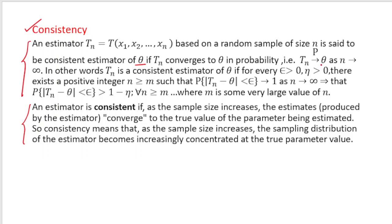It means that Tn tends to theta in probability as n tends to infinity. In other words, Tn is a consistent estimator of theta if for every epsilon greater than 0 and eta greater than 0, there exists a positive integer n greater than or equal to m such that the probability of the absolute value of Tn minus theta being less than epsilon will approach to 1 as n tends to infinity. It means that the probability for Tn minus theta absolute value less than epsilon is greater than 1 minus eta for n greater than or equal to m, where m is some very large value of n.